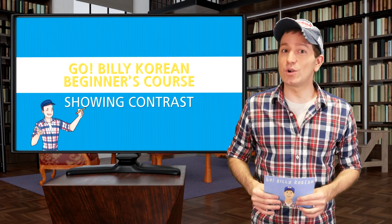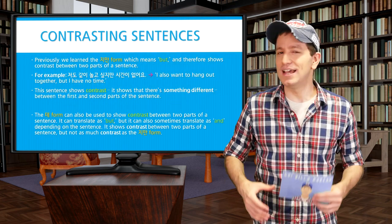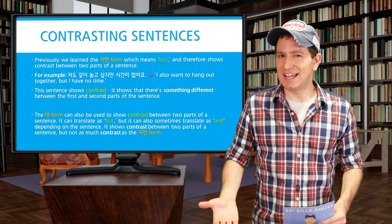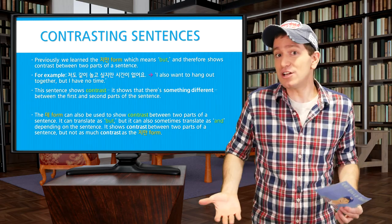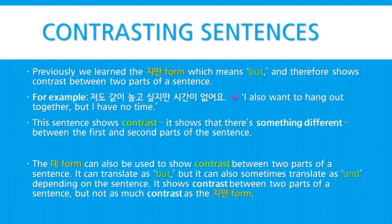Welcome back. In this lesson we're going to learn about how you can show contrast in your sentences. We previously learned the form 지만, which means 'but,' and is used for showing contrast between two different halves of a sentence. For example, 저도 같이 놀고 싶지만 시간이 없어요 — I also want to hang out together, but I have no time. So this sentence shows contrast between the first and second parts.